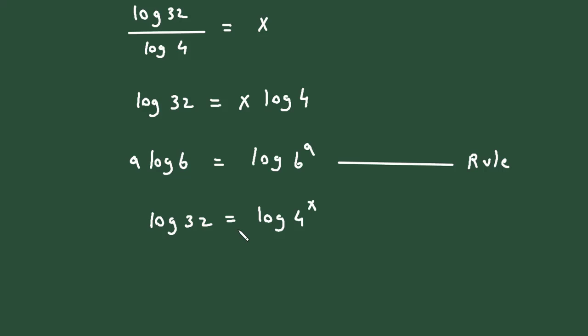Now we can take anti-log on both sides or cancel the log. So we get 32 equals 4 to the power x.